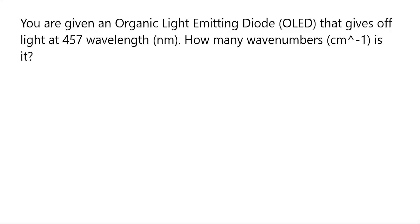In this video, we'll be converting from nanometers over wavelength to wavenumbers, which is 1 over centimeters. The question says, you are given an organic light-emitting diode, OLED, that gives off light at 457 wavelength. How many wavenumbers is it?